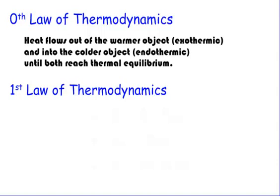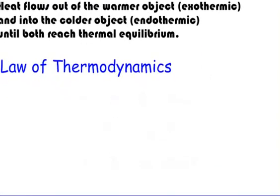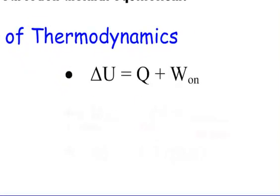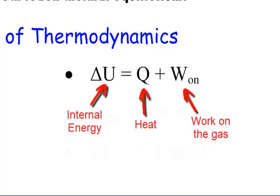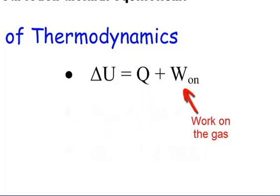The first law of thermodynamics says that energy can't be created or destroyed. It depends on three equations, and you want to write these down. The first equation is delta U equals Q plus W. Delta U is internal energy, Q is heat, and W is work — specifically the work done on the system.